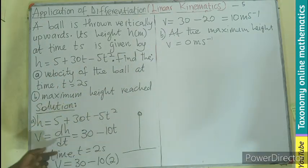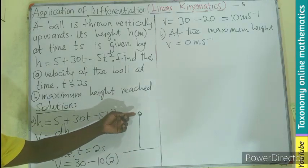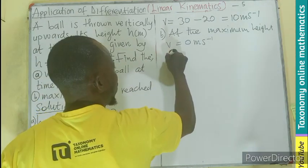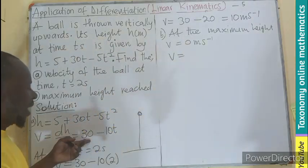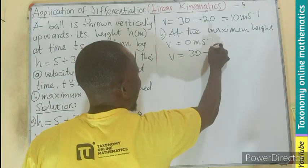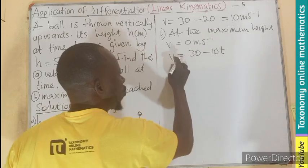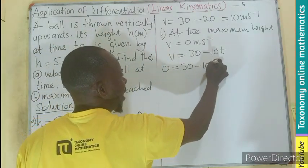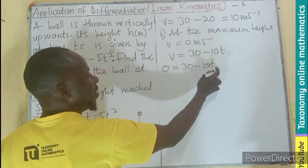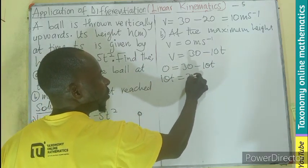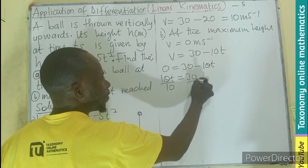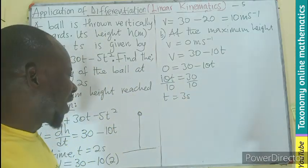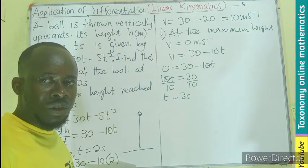So let's find the time at which the ball reaches maximum height. We know v equals 30 minus 10t. When v becomes zero, we have 0 equals 30 minus 10t. Rearranging, 10t equals 30, so dividing by 10, t equals 3 seconds. Meaning after 3 seconds, the ball will begin to come down.